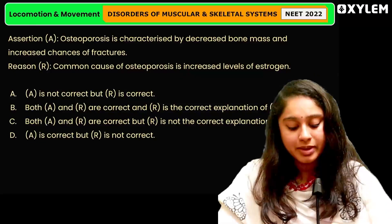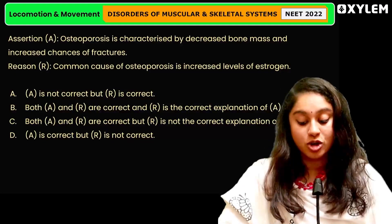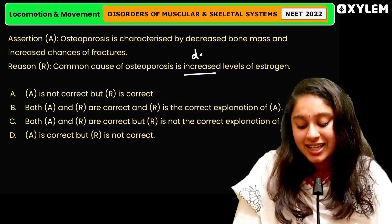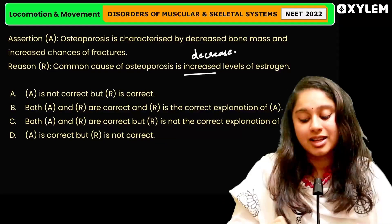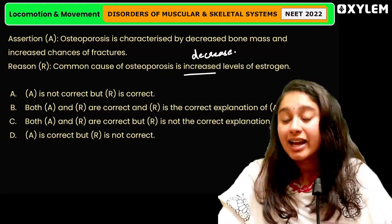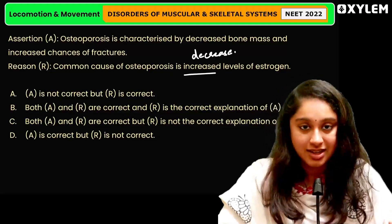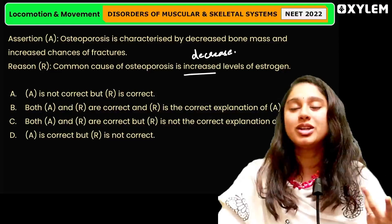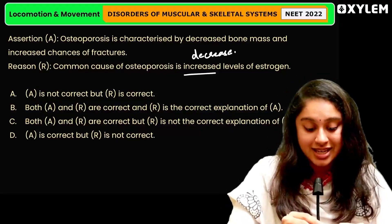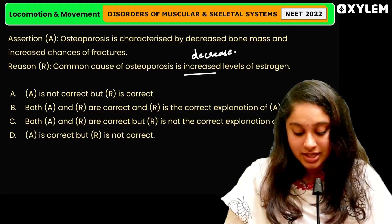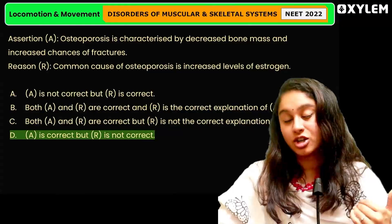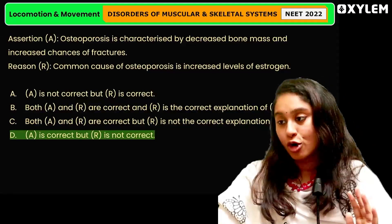The reason mentioned is that the common cause of osteoporosis is an increased level of estrogen. But actually, it is a decrease in estrogen that leads to osteoporosis. So, the reason is false, but the assertion is correct. Therefore, option D is the correct answer — assertion is correct but reason is false.